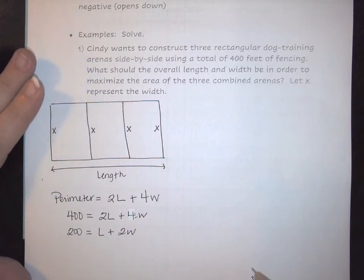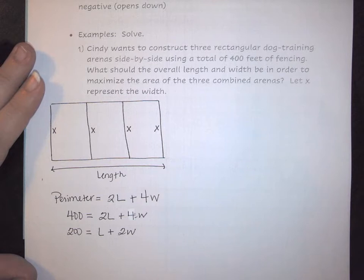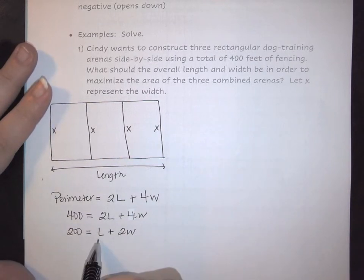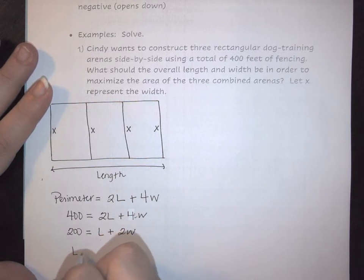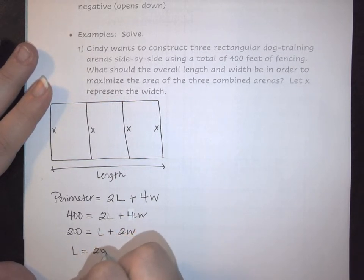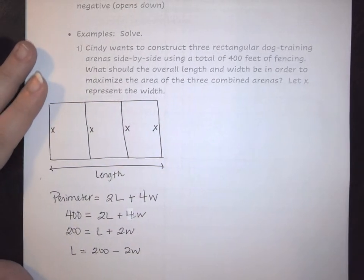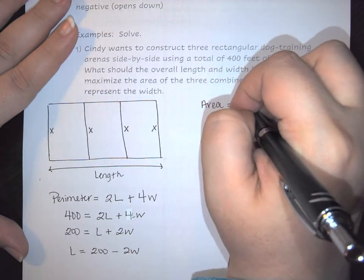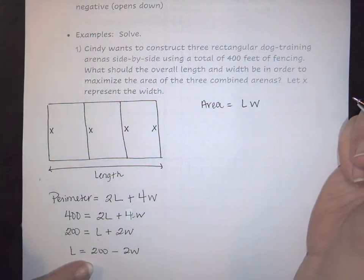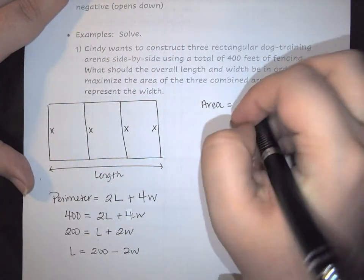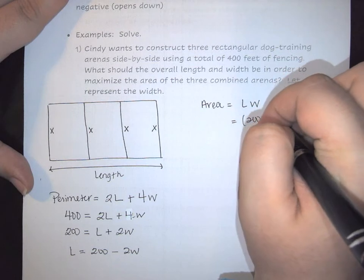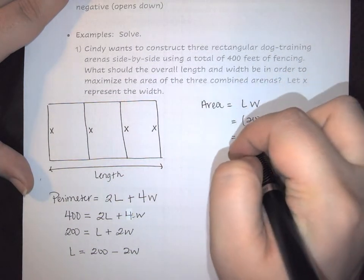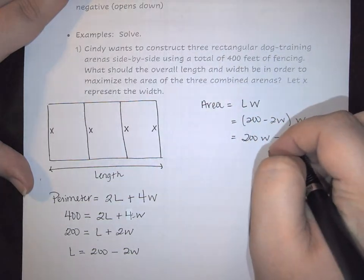We can use this idea when working with our problems. Here the variable we have is L. So we can say that our length is going to be 200 minus 2W. In this instance we know that my area is generally length times width. My length is going to be 200 minus 2W. So in this case we would end up having 200 minus 2W times your width. So this is going to be 200W minus 2W squared.